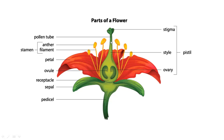This is style. This is stigma. There is a pollen tube. This is anther. Filament. Petals. Sepals. So these are the many parts of the flower.